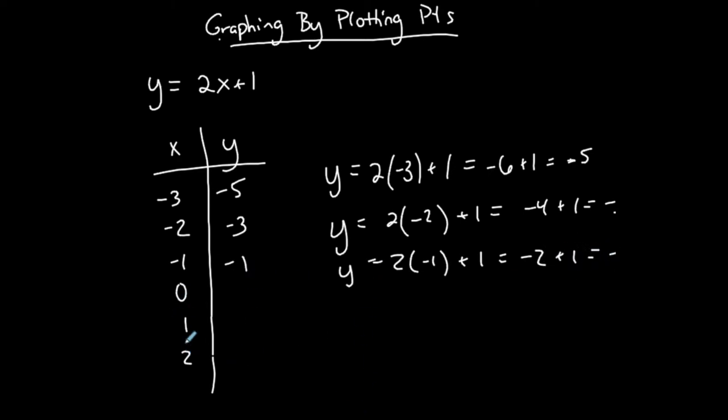And then just continue for the rest of these. When x is 0, I'm going to stop doing this part. When x is 0, I get 2 times 0, which is 0, plus 1, which is 1, 2 times 1, which is 2, plus 1, which is 3, 2 times 2, which is 4, plus 1, and that is 5. So these are my ordered pairs.